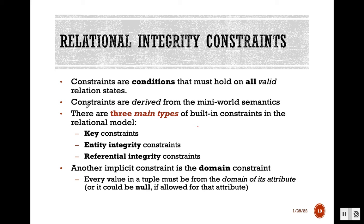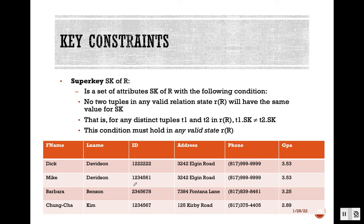There are three main types of constraints: key constraint, entity integrity constraint, and referential integrity constraint. Another implicit type is the domain constraint. Domain constraint means every value in a tuple must be from the same domain of its attribute.